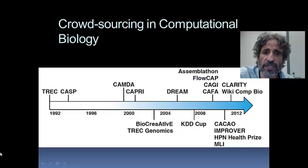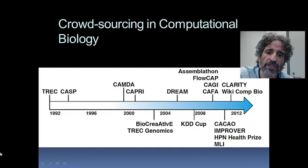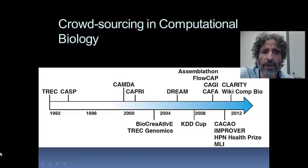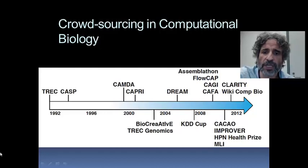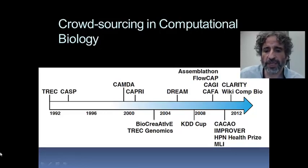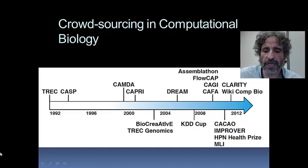The RE of DREAM is reverse engineering — trying to find the causal mechanisms underlying biological systems. The A is for assessment: understanding how well or badly we are solving the problem. So DREAM, Dialogue for Reverse Engineering Assessment of Methods, is an effort to lend rigor and foster collaboration in areas of network inference. There are a number of other interesting projects continuing to proliferate.